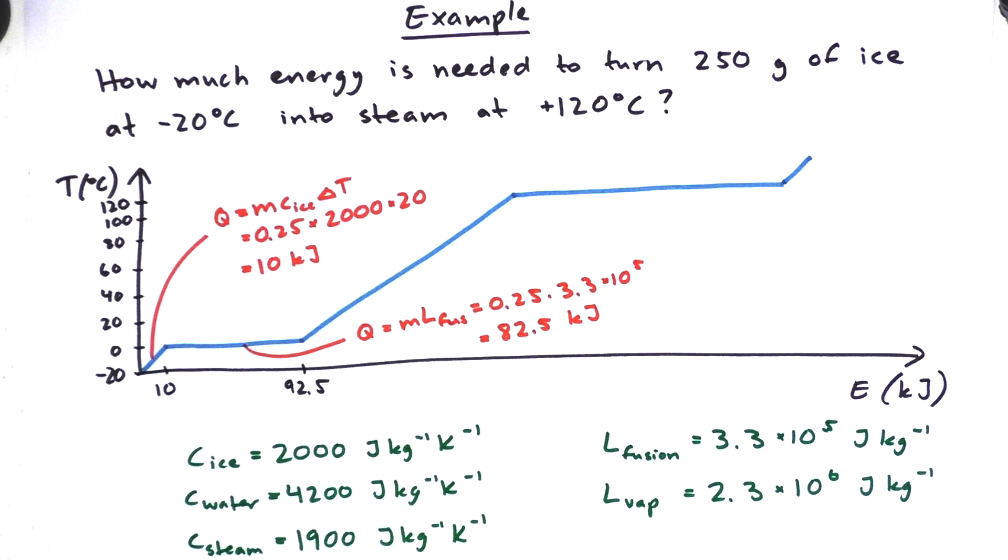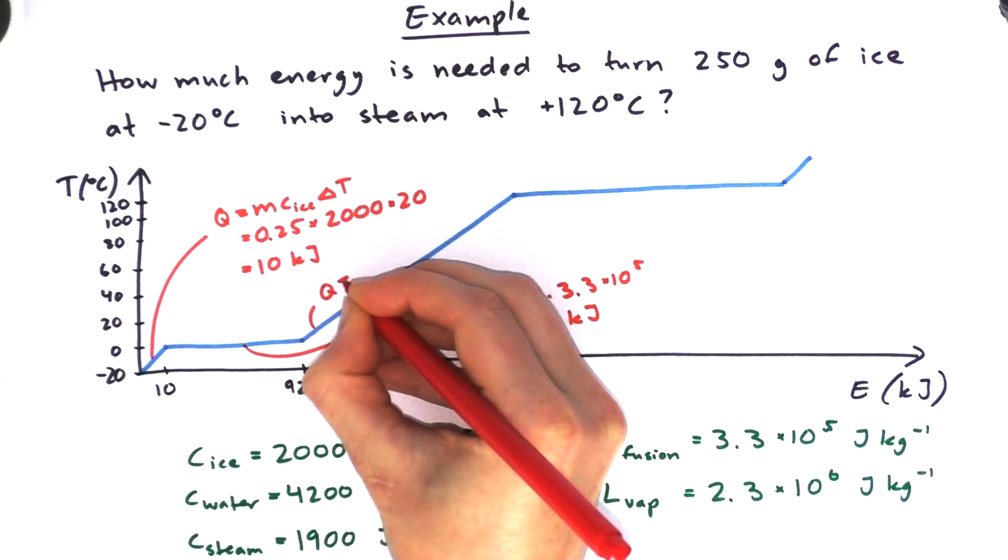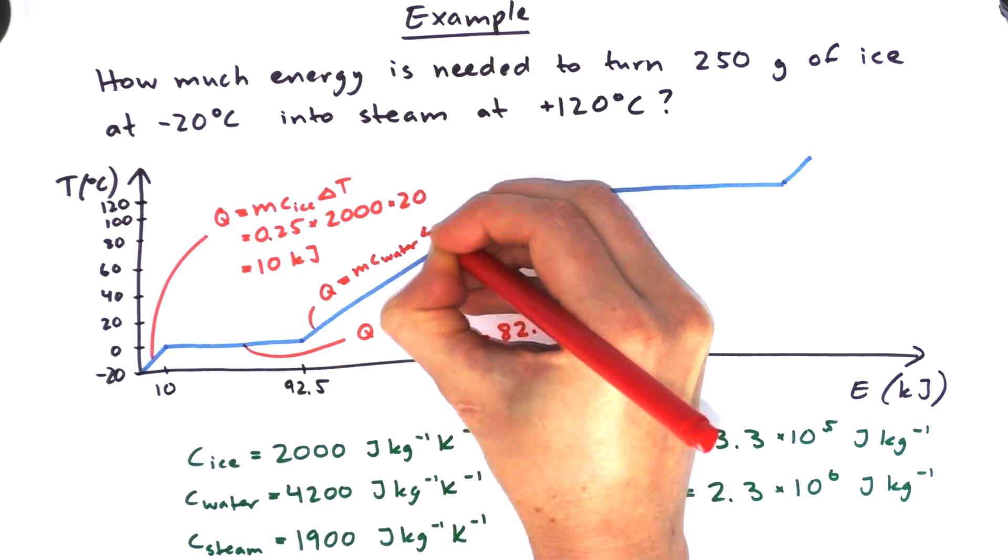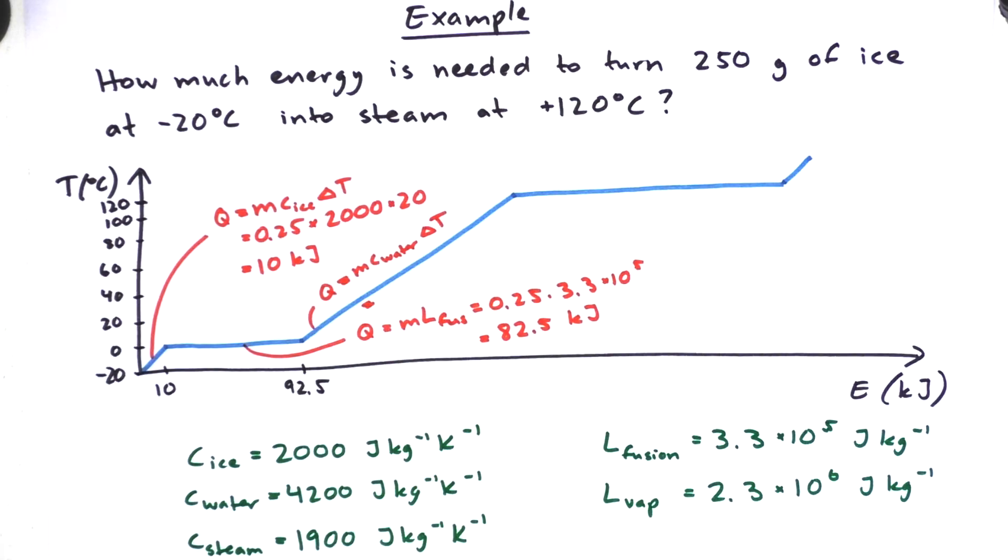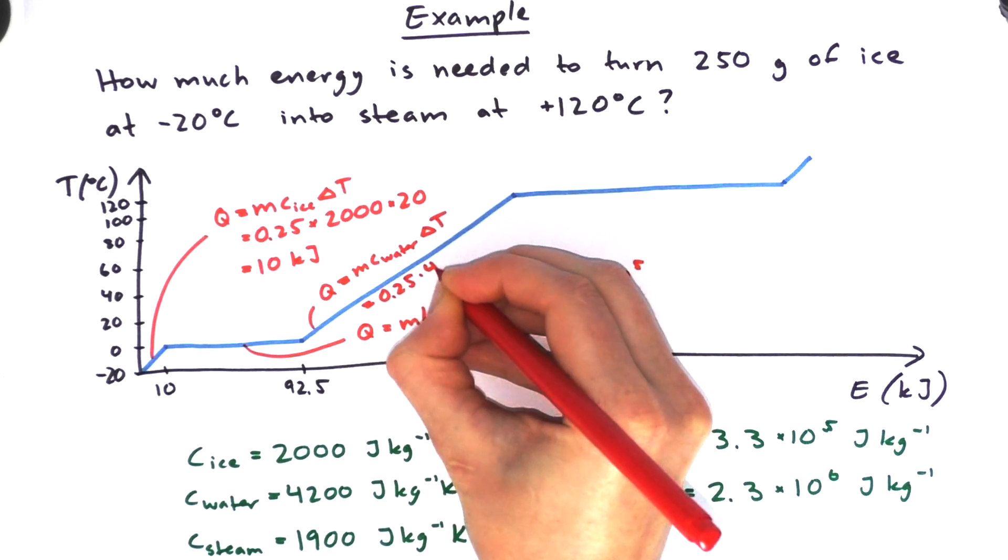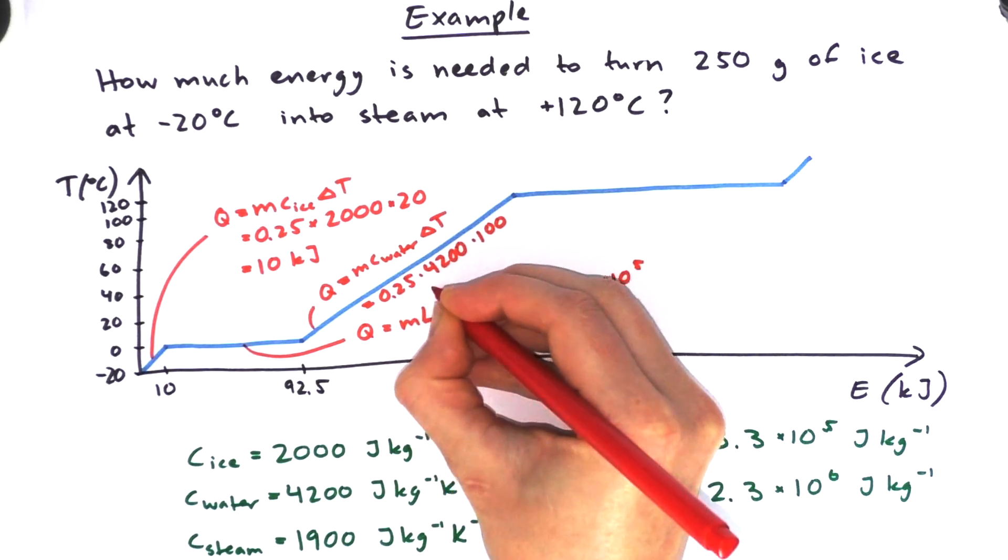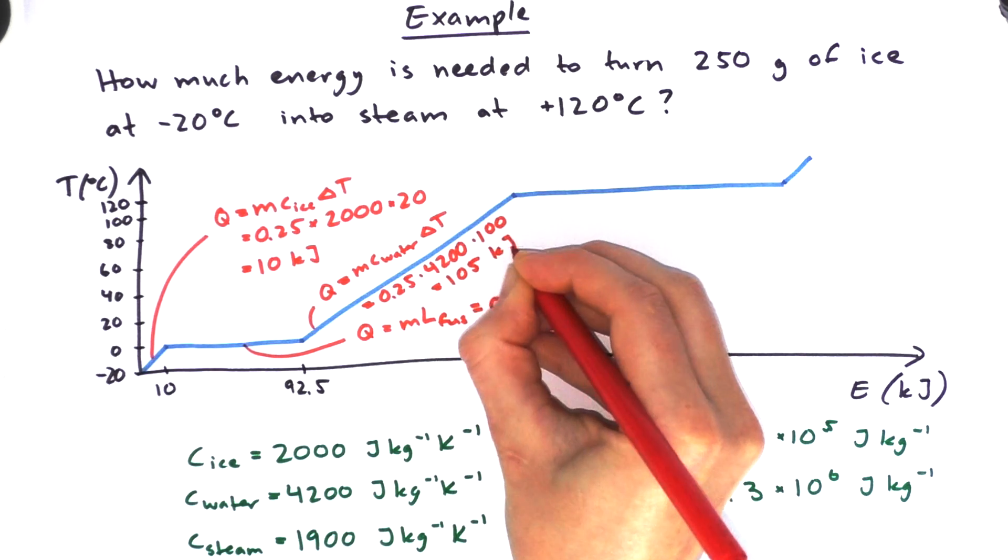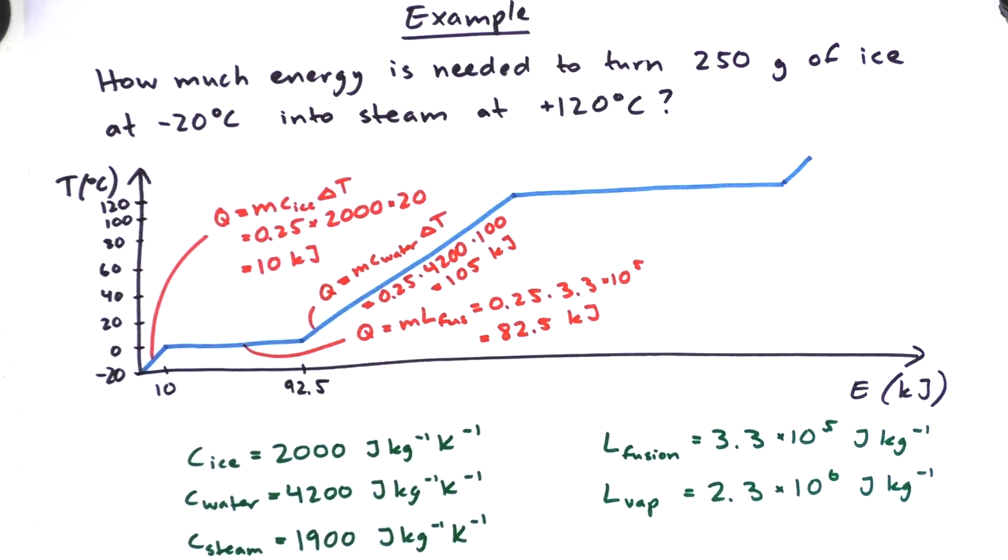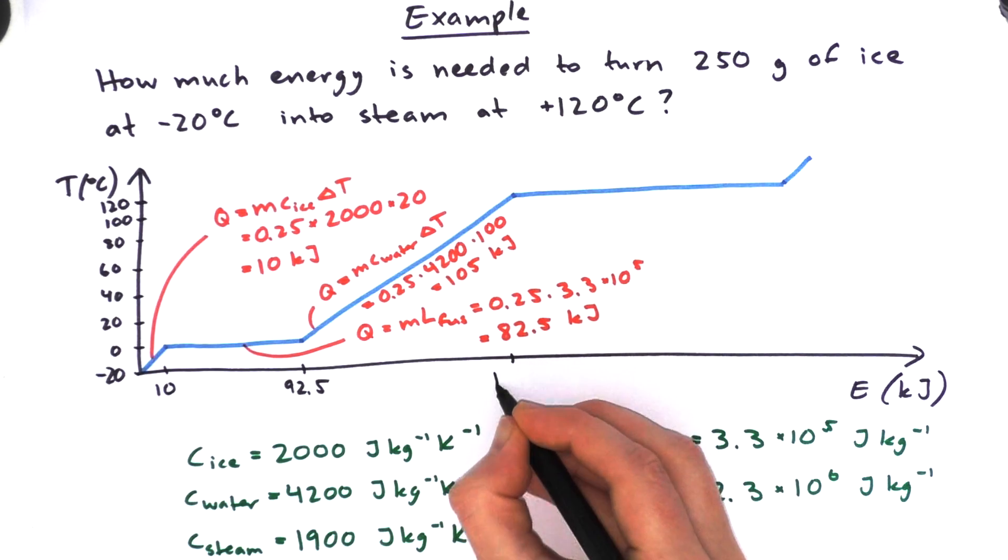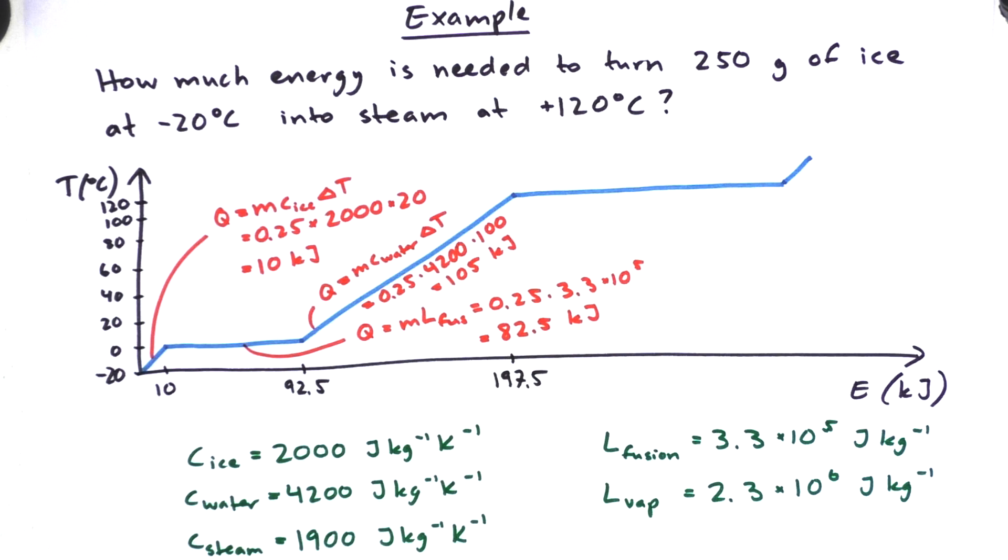And next we're going to have to heat up the water from freezing temperature up to boiling temperature. So from zero to 100 degrees. That's a temperature difference of 100. And we plug in all of that into the MC delta T formula. So we get 0.25 kilograms times 4200 joules per kilogram per kelvin times 100 kelvins. And if we put that in our calculator it gives us 105 kilojoules. So adding that to our running total that we had, we are now at 197.5 kilojoules.